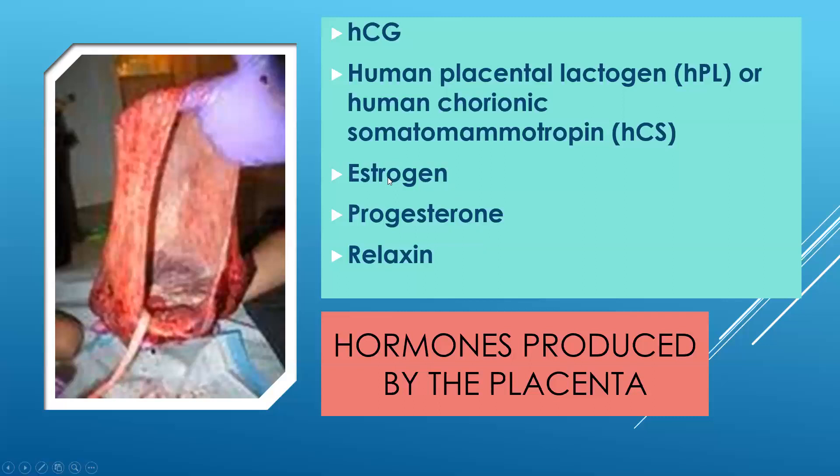Estrogen is the hormone produced by the placenta and it is directly inversely related to prolactin. Prolactin is the hormone of breast milk — that is what causes the milk to be made. Estrogen suppresses prolactin until the placenta comes off the wall of the uterus and goes away. Once that large amount of estrogen is no longer there, prolactin increases, and that's why we see milk production increase over the first week or two. So the fact that you would eat an organ that is full of estrogen makes no sense as a way to produce large amounts of breast milk.